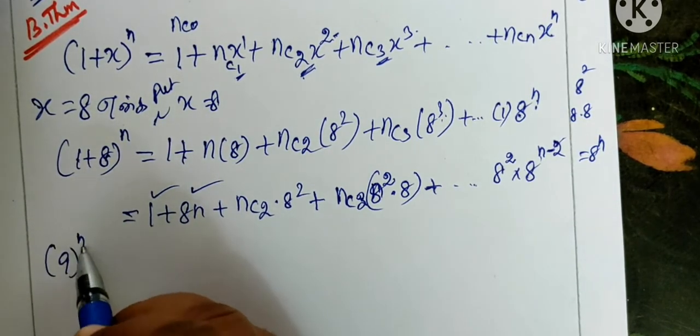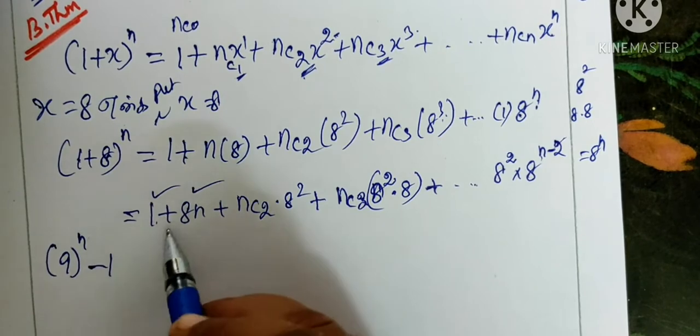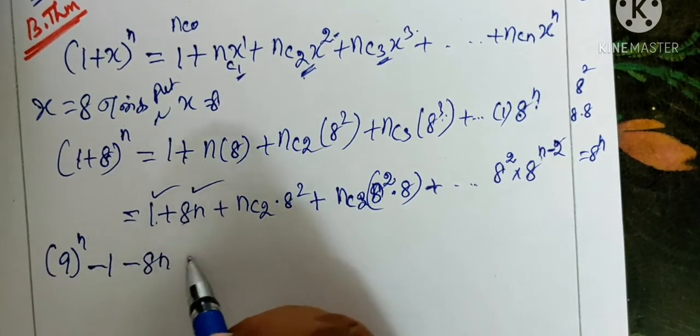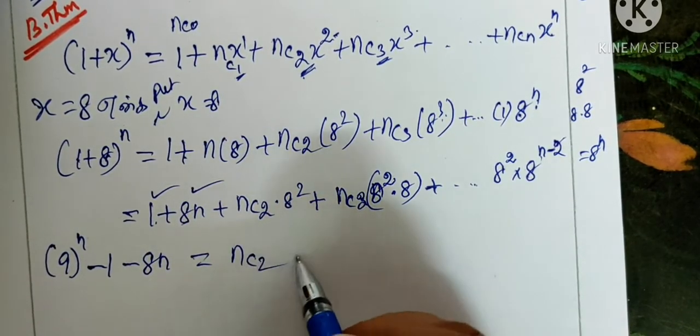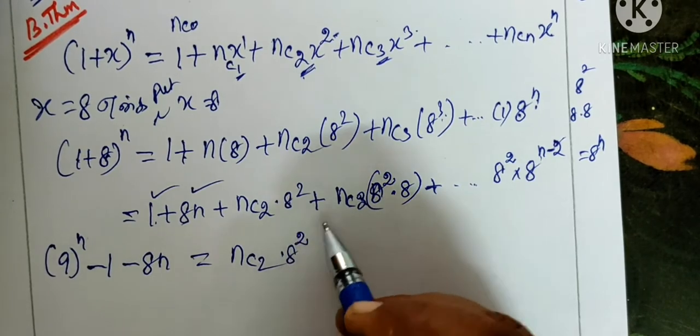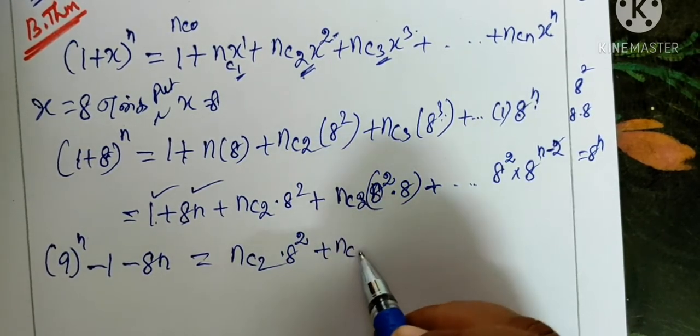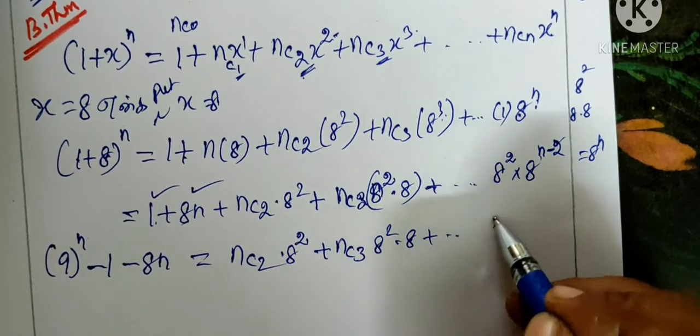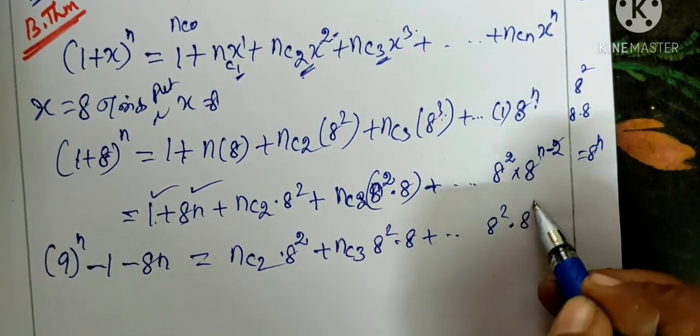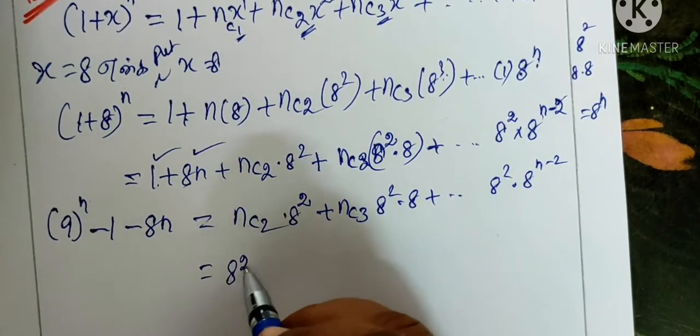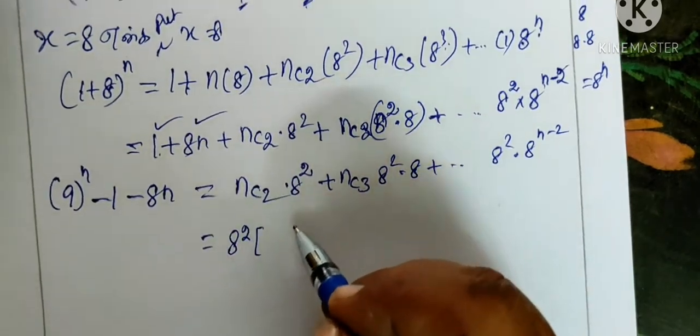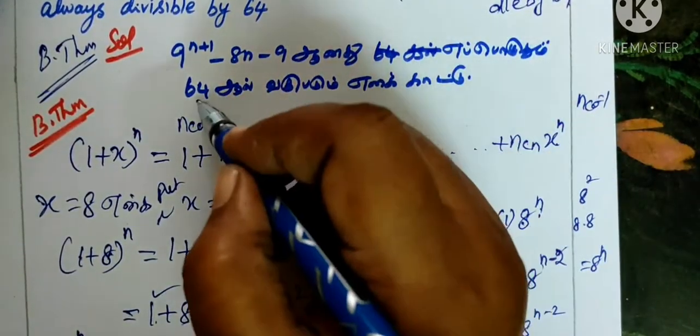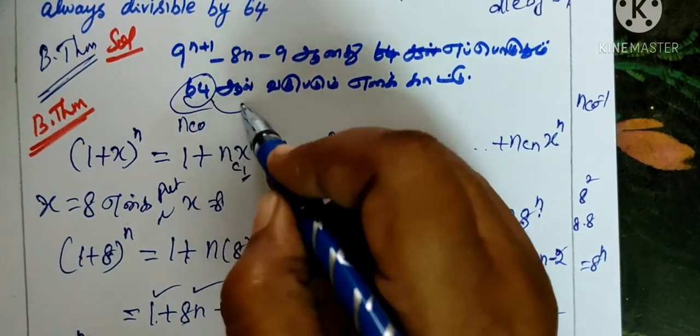What we have is 9 power n plus 1 minus 1 equals nc2. We have 8 squared. What I did is 8 squared into 8 and so on, 8 squared into 8 power n-2.